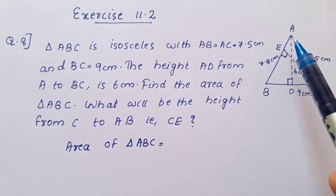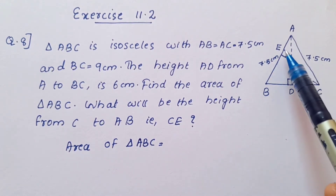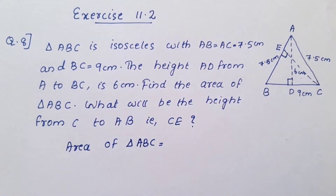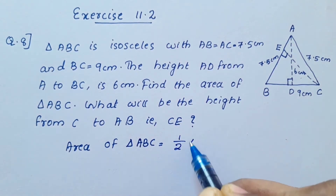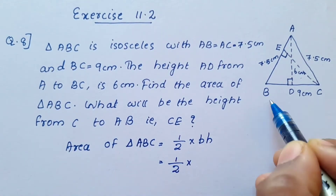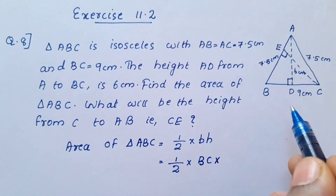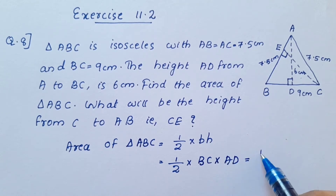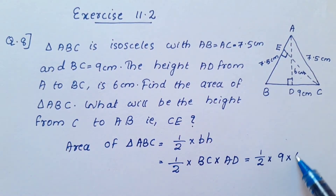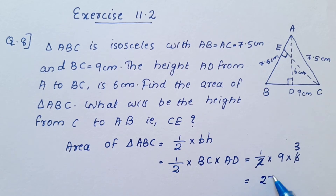First, we find the area of triangle ABC. Area equals half into base into height, that is half into BC into AD, which equals half into 9 into 6, which equals 27.